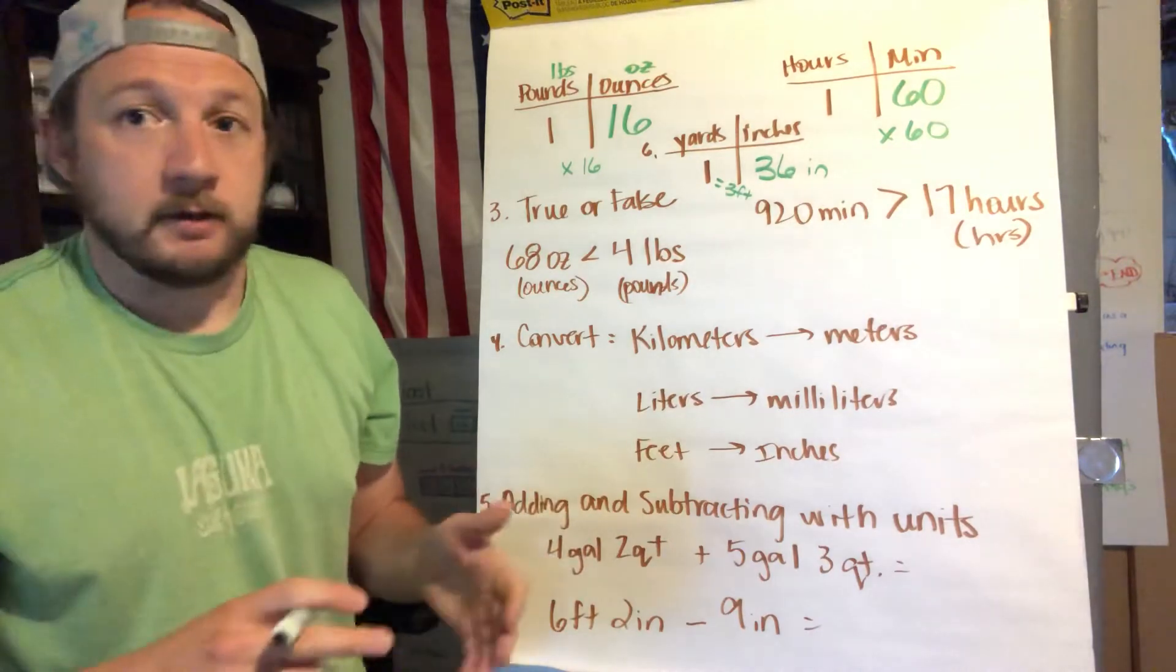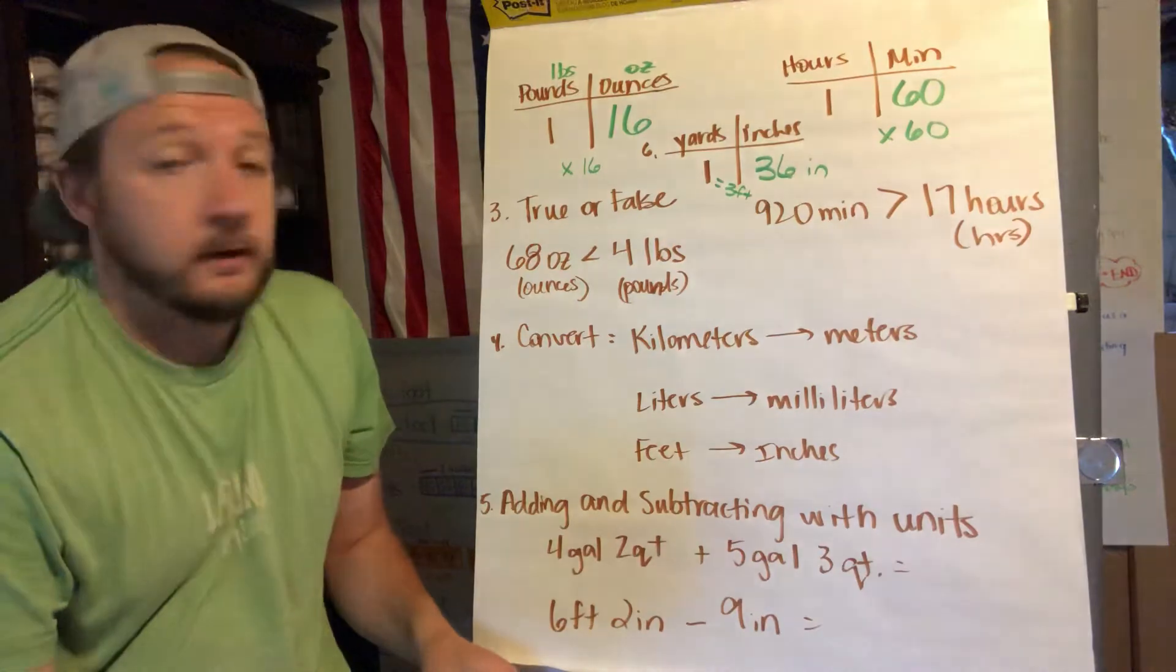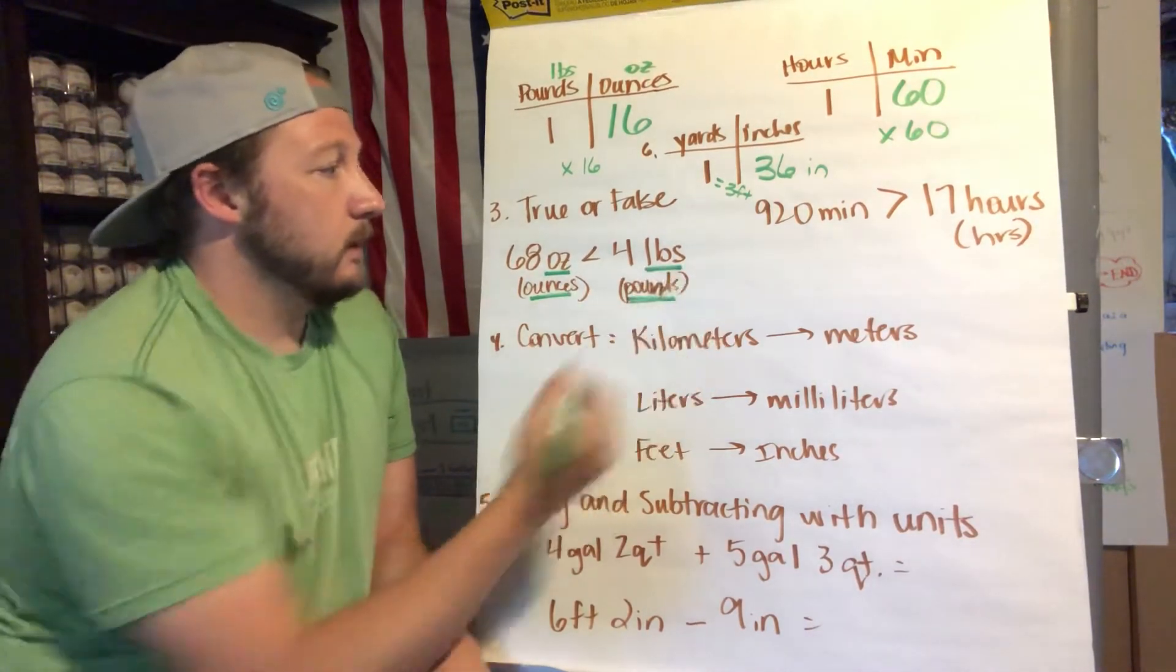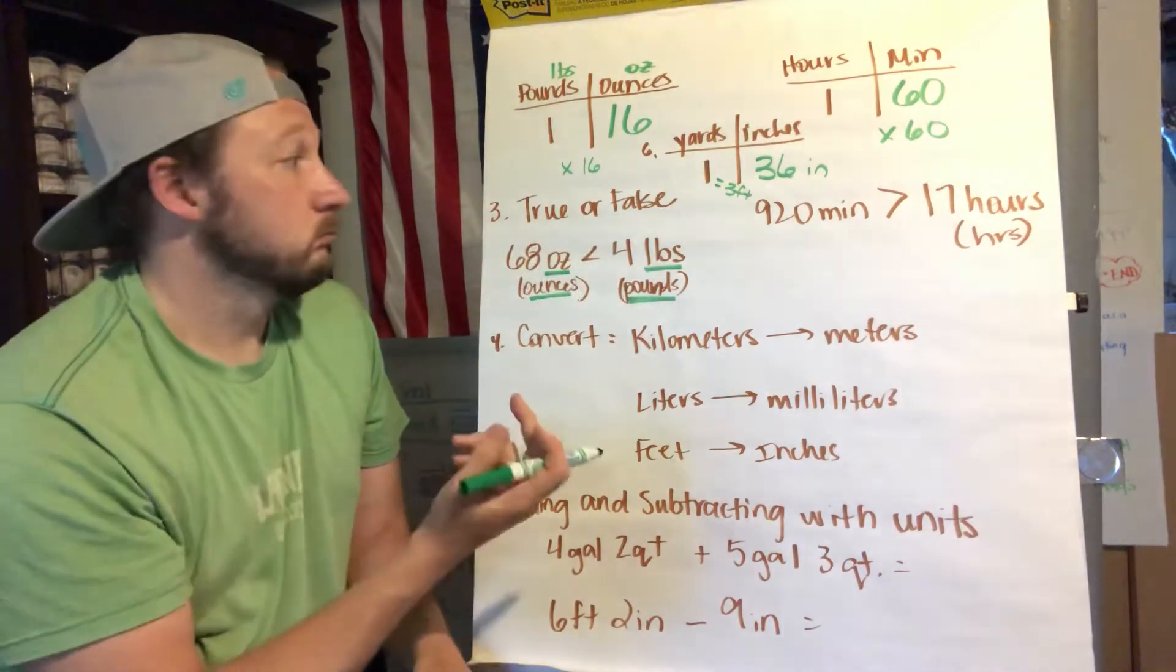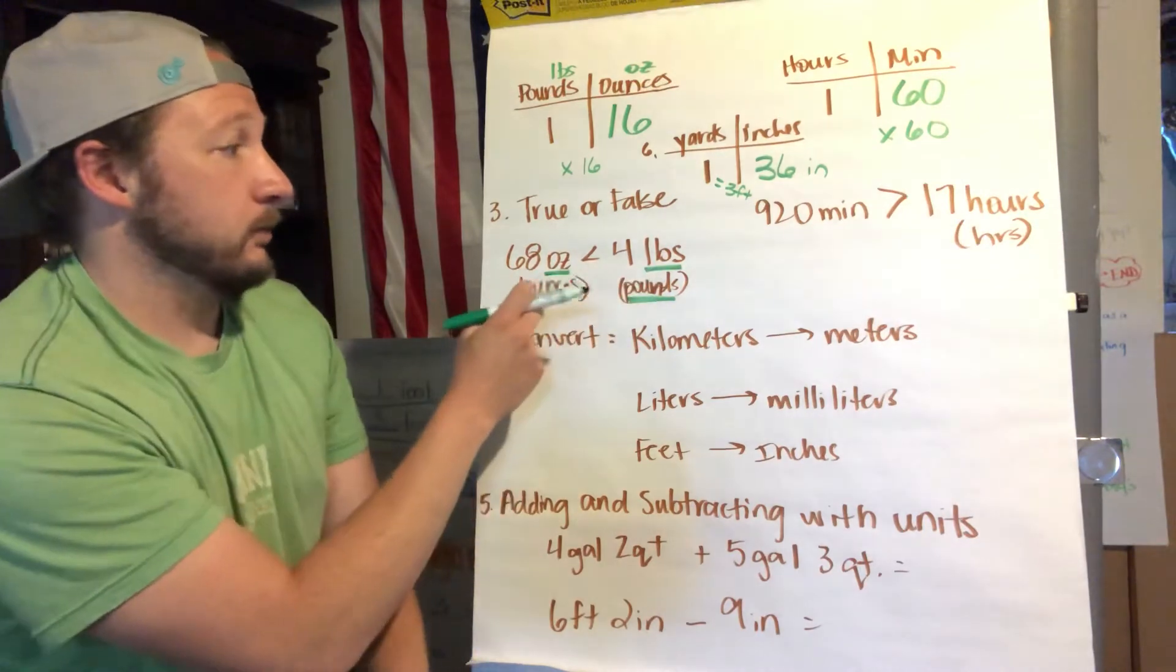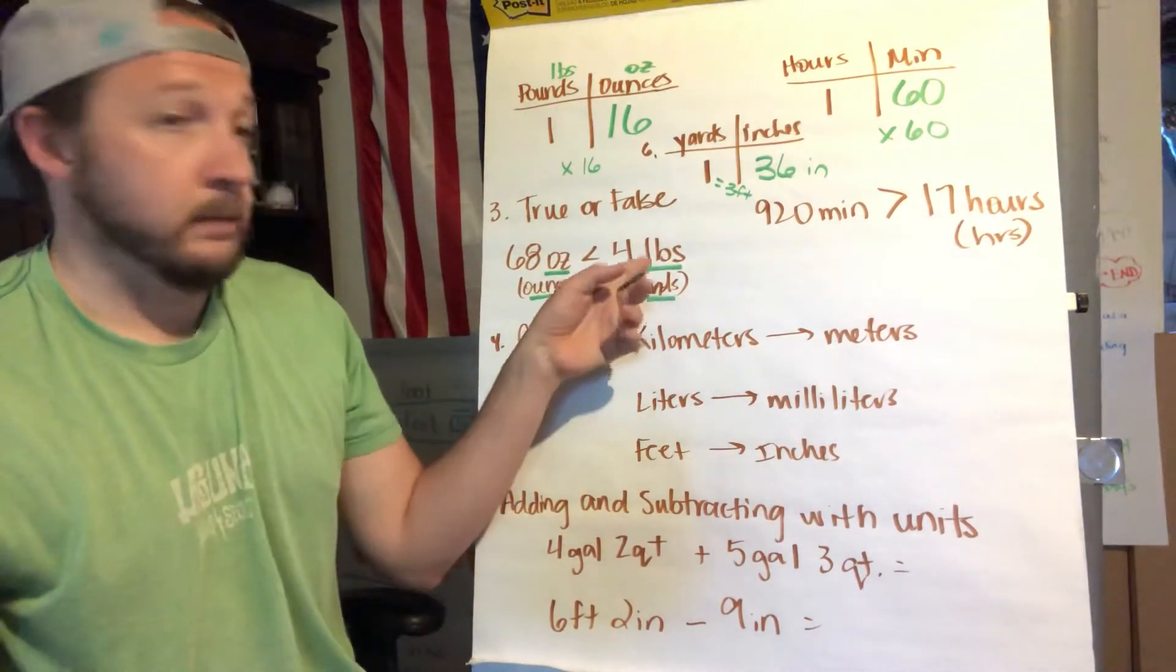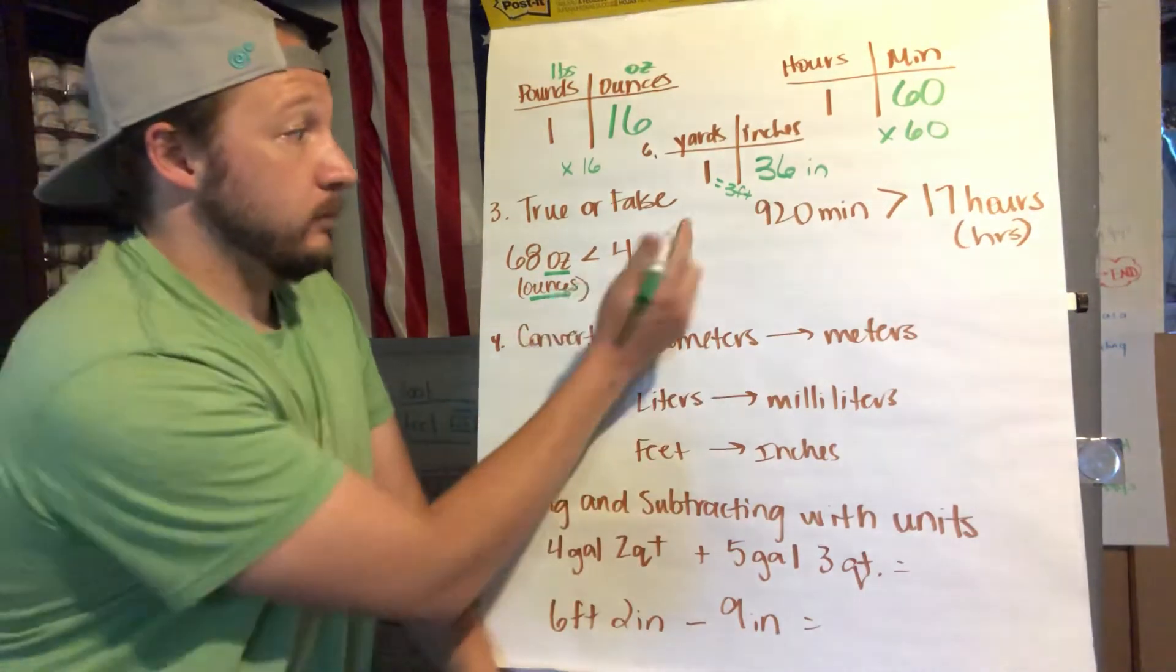And if you were smart you'd be taking notes. Maybe if you're lucky I'll put a picture of this up, we'll see, or actually you guys wouldn't see it already being that I already posted the assignment, but anyway I digress. Question number three, true and false questions. Here's the thing, you have to convert because on this side you have ounces, on this side you have pounds.